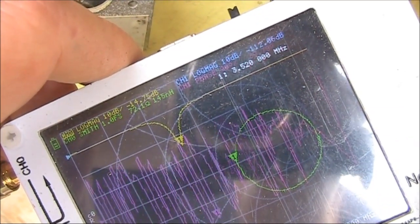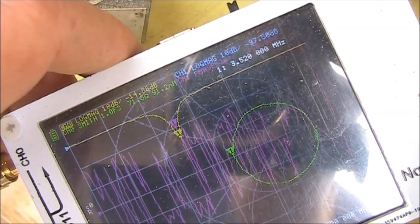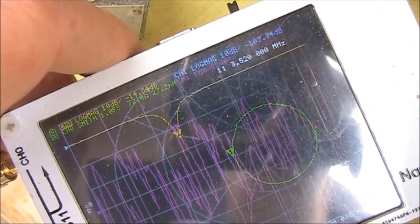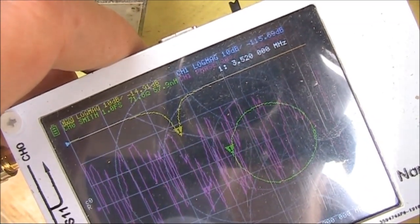It's a fairly sharp curve, so you could put this onto an 80 meter transmitter and you'd be tuned up fine.